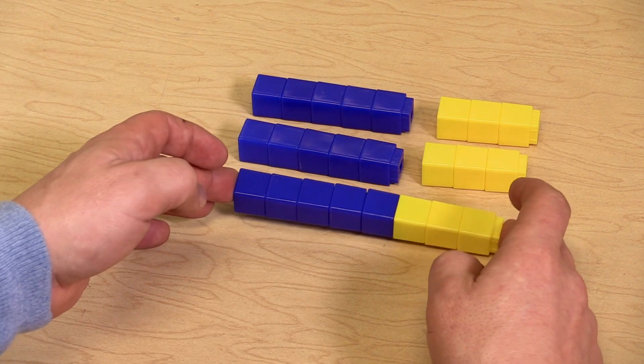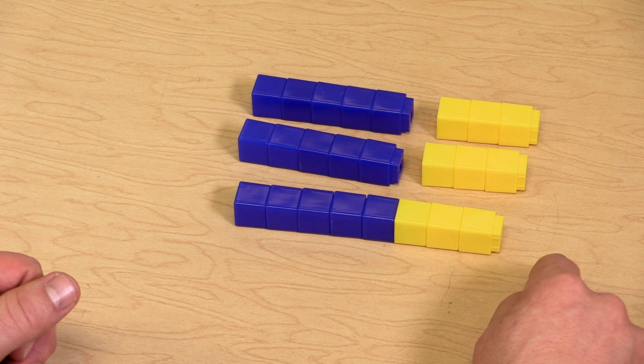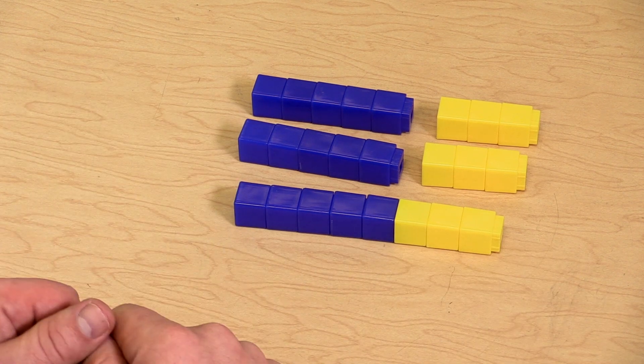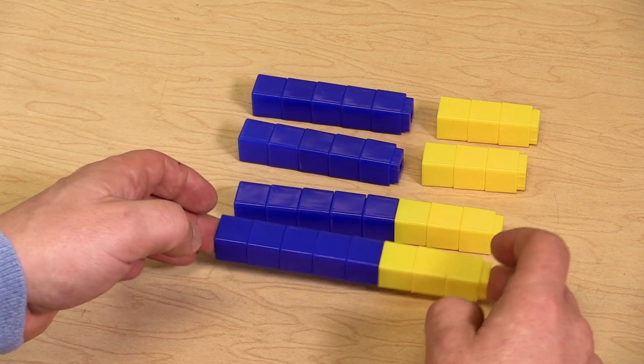So they would build a third group. Now we have 9 groups of yellow and 15 groups of blue. So we would need one more.